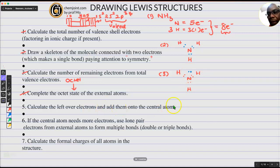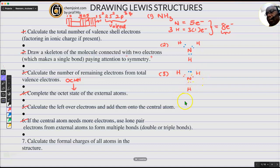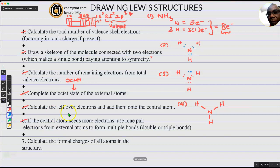Hydrogen is happy with 2 electrons in a duet state, but nitrogen needs to be octet. We are remaining with two electrons. Those two are given to nitrogen. They are not taking part in bonding. We gave the lone pair to the central atom. It doesn't need more because we've used all. This is where Lewis would stop. So Kekulé went further and converted the bonding pair of electrons to be bonds.